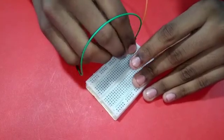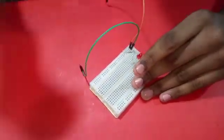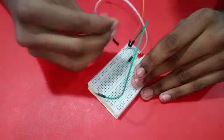And take one jumper wire and connect LED negative to breadboard negative.